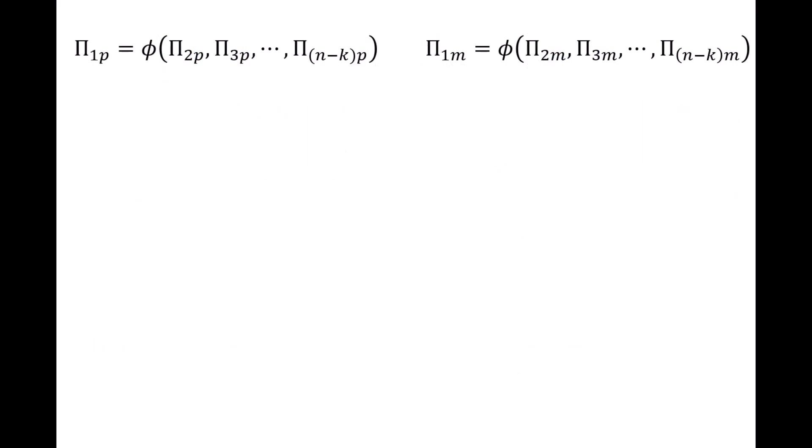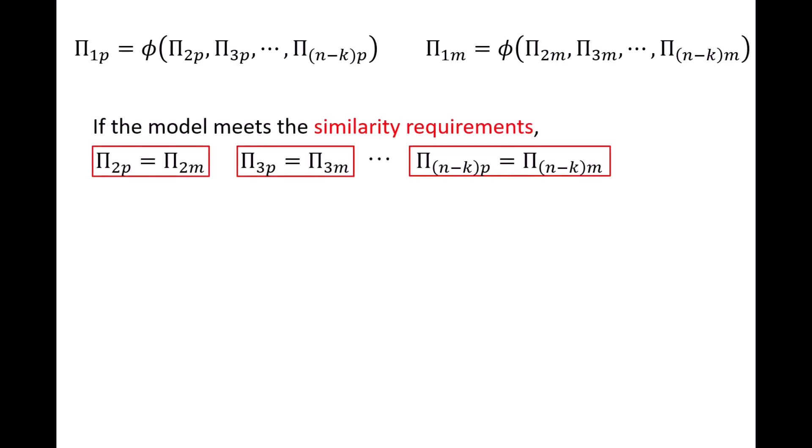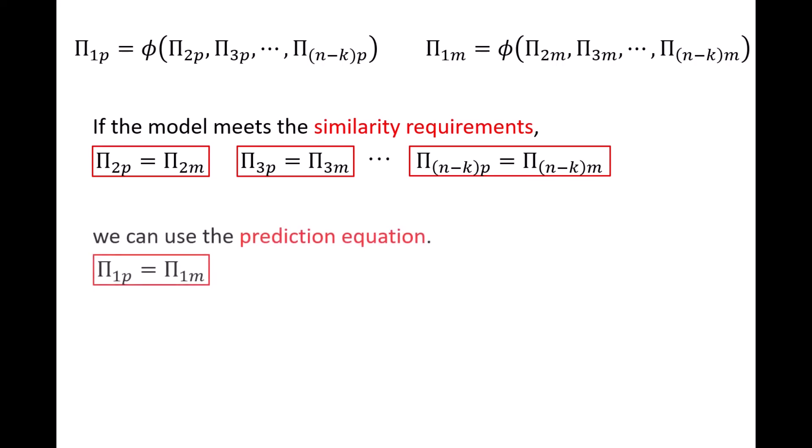Now let's generalize this concept for systems that have more than two pi groups. In general, a system will have n minus k pi groups, where n is the number of relevant independent and dependent variables, and k is the number of reference dimensions required to describe those variables dimensionally. If we want to predict how a prototype should behave at particular values of pi 2, pi 3, and so on, we operate the model at the same values of those pi groups — these are called the similarity requirements. If the similarity requirements are met, then pi 1 of the prototype equals pi 1 of the model, which is called the prediction equation, and it is used to find the dependent variable of interest in the prototype, such as the pressure drop per length of pipe.